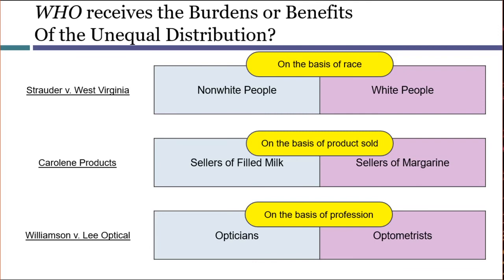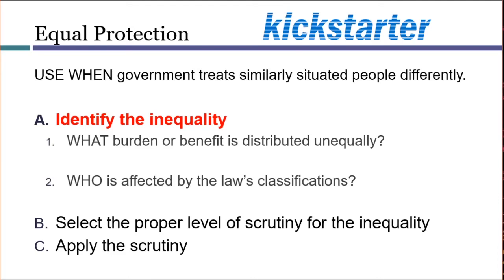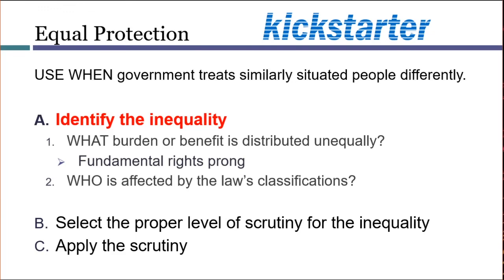There's a qualitative difference between these different bases for distributing burdens and benefits unequally. It doesn't seem particularly suspicious or improper to allocate rights differently based on which product is being sold or which profession one is working in — as we know from living our lives, that happens all the time. However, allocating rights on the basis of race is suspicious or suspect — it's a suspect thing for the government to do. When looking at what is being distributed unequally, it will matter whether that thing is considered a fundamental right, so this is often known as the fundamental rights problem. When looking at who is affected by the unequal distribution, it will matter whether the classification is suspicious or suspect — that's why this is known as the suspect classifications prong.